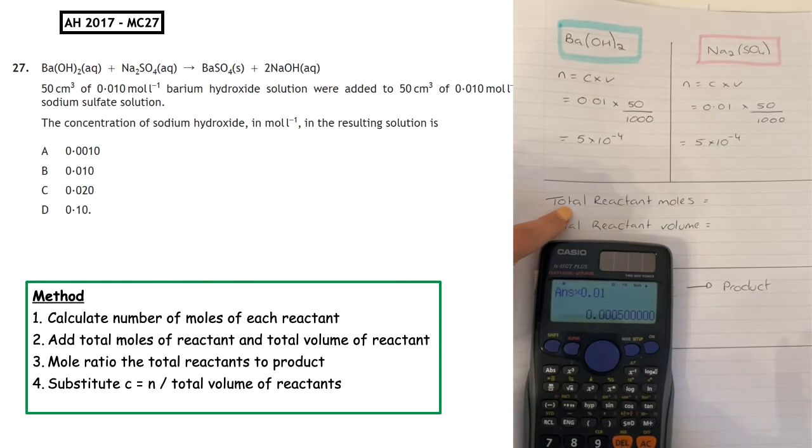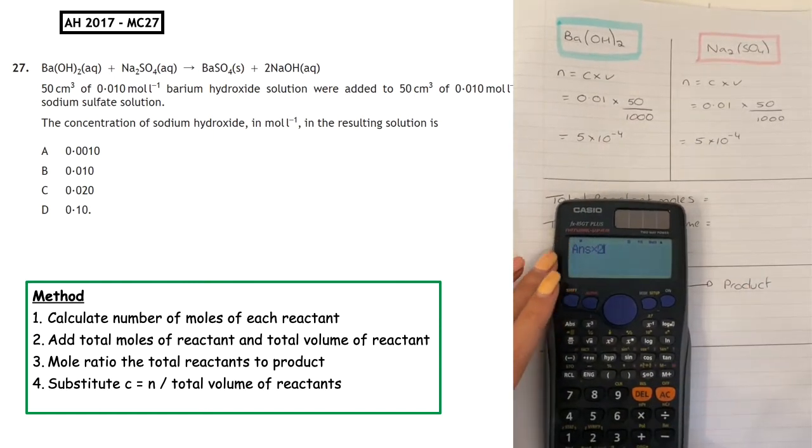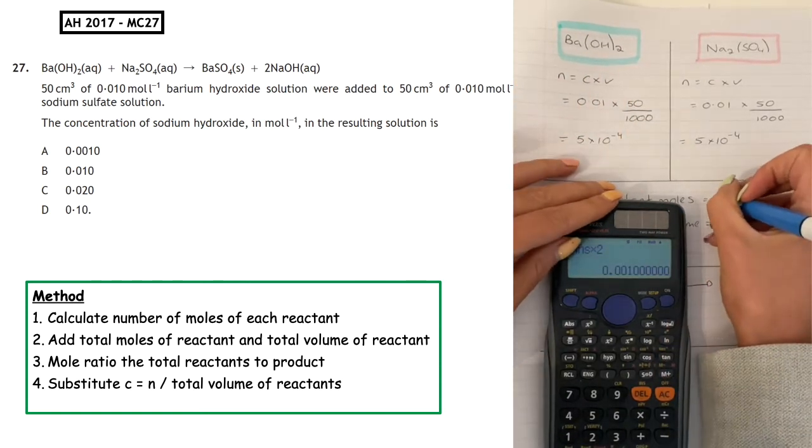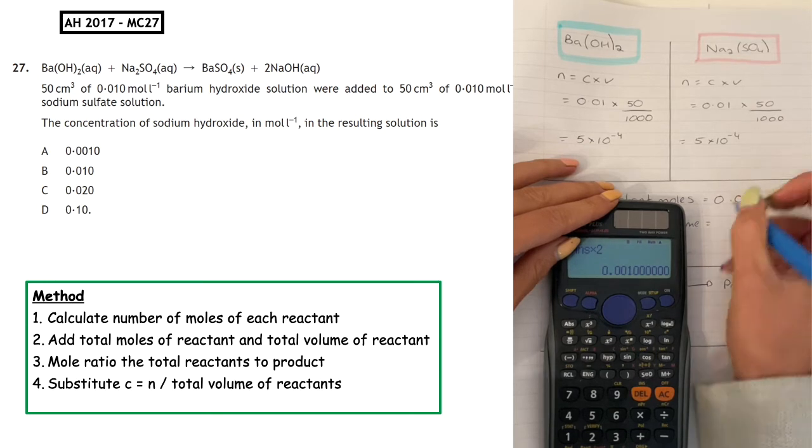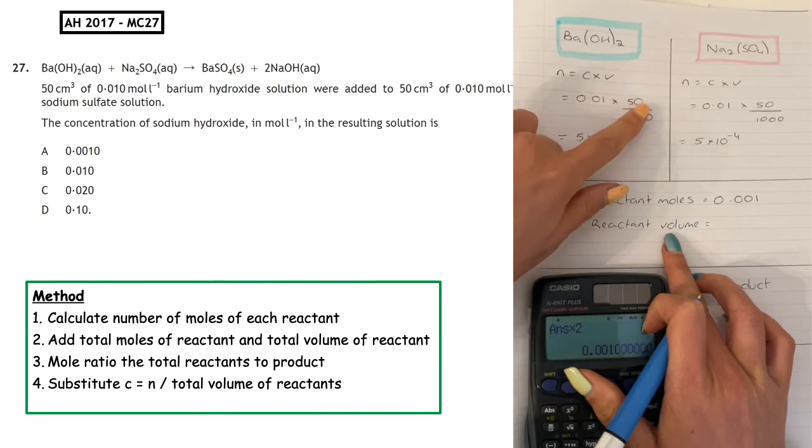Because of that, what we have to do is add up the total reactant moles. I've got 5 times 10 to the minus 4, and I'm going to times that by 2 because I've got that on either side. That gives me the total number of moles is 0.001 moles.